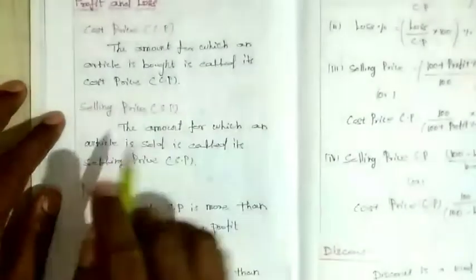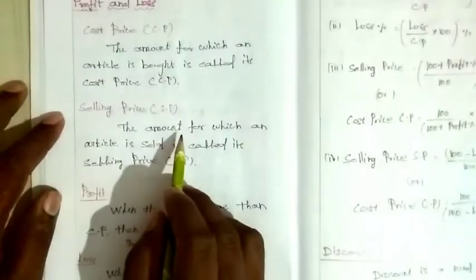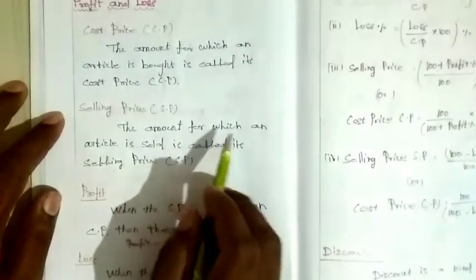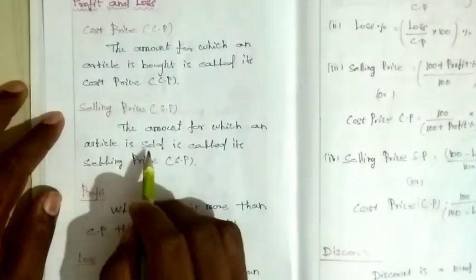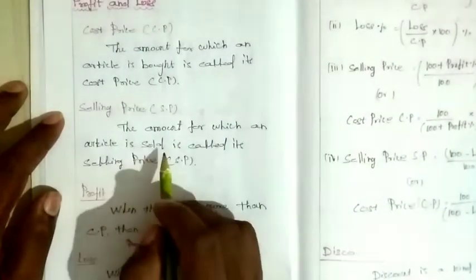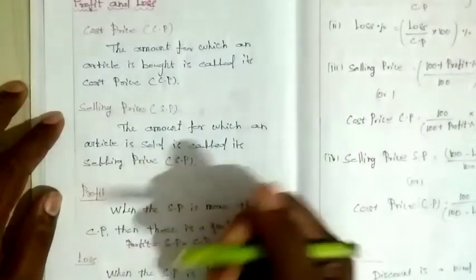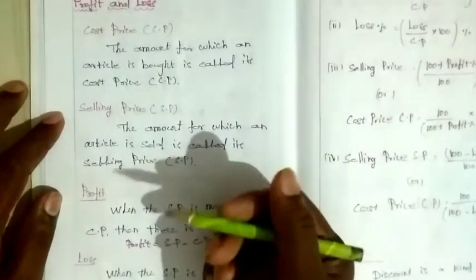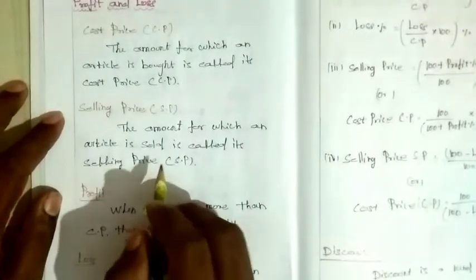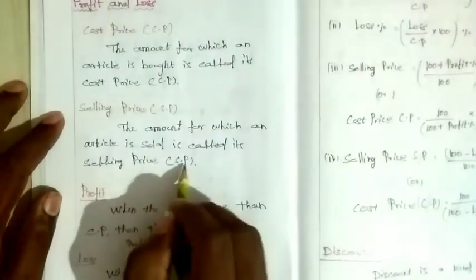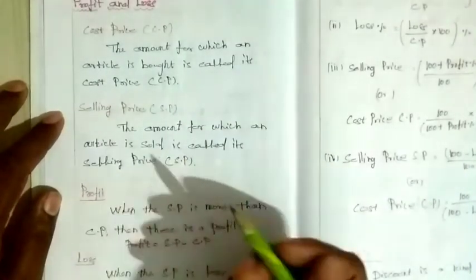Next, selling price: the amount for which an article is sold is called the selling price.